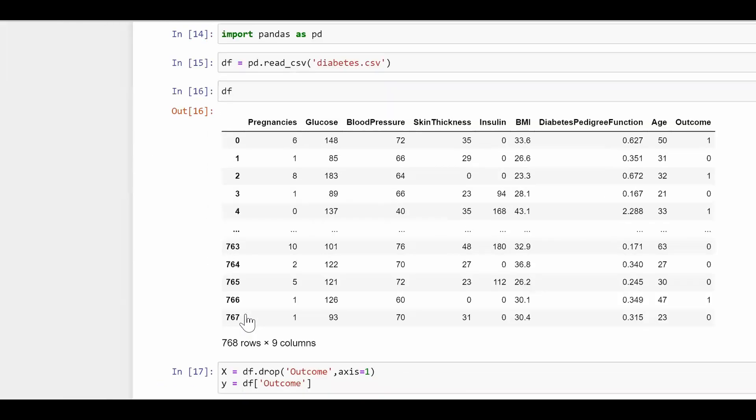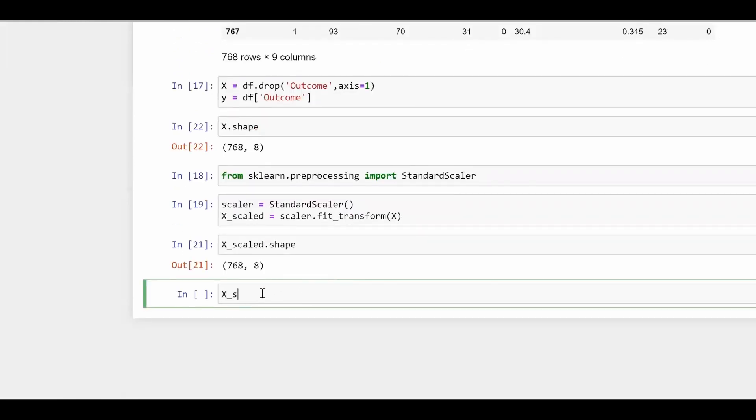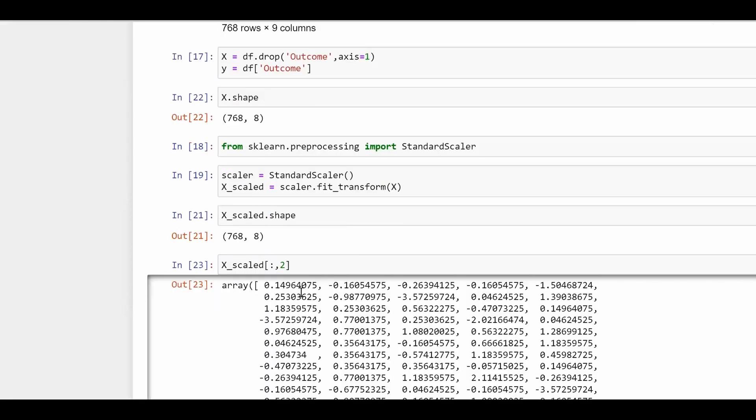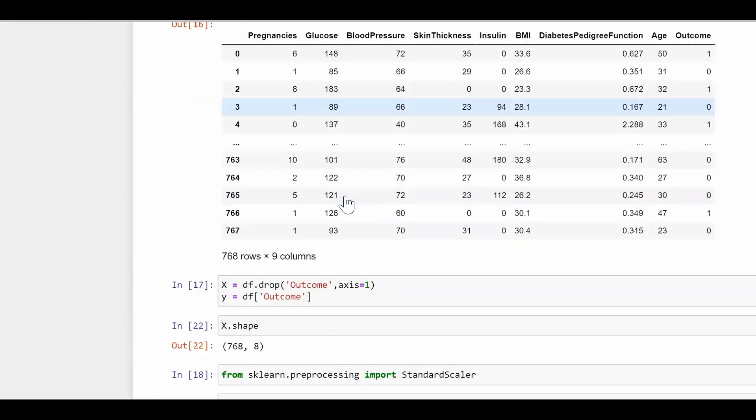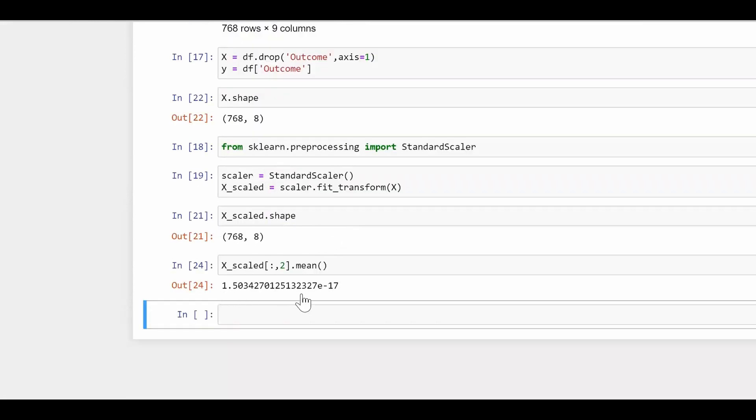Now if you want to know whether it has scaled or not, let me just take one of the columns. Let's say I'm taking blood pressure. How do I choose my blood pressure from here? This is a numpy array, right? So I have to select all the rows and I have to go for second column: zero, one, two, because this one belongs to zeroth index, one and two. So I'll say x_scaled, all the rows and select the second index column. This is my blood pressure. Now check for what its mean is. So I'll say .mean.